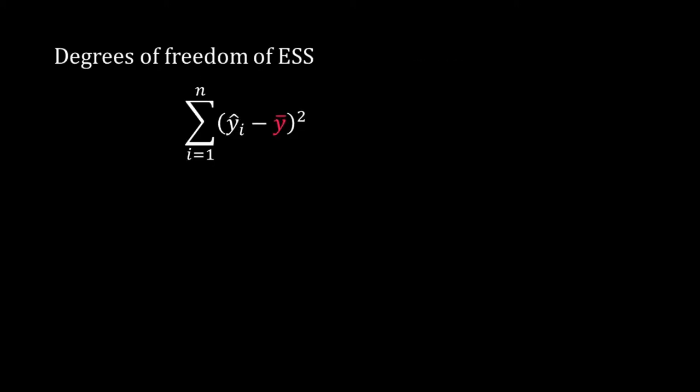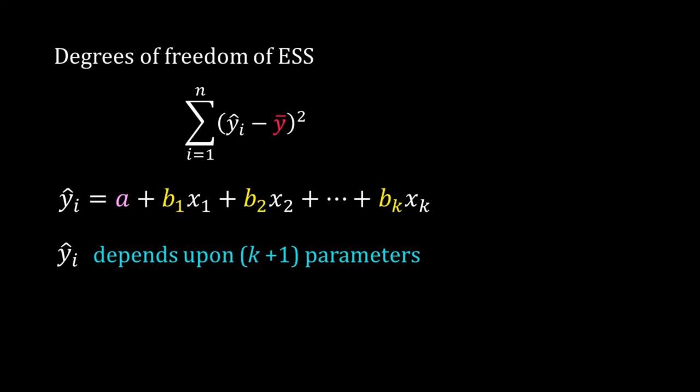We use a similar logic for ESS. Like TSS, we are taking a deviation from the mean y bar. We are not using the original y values in the data. Here yi hat is the value obtained from the regression model. So we cannot change the value of yi hat as per our whim. In a multiple regression model with k independent variables, we have k plus 1 parameters or coefficients: a, b1, b2, b3 and so on to bk. For a given value of predictors, the value of yi hat depends on this k plus 1 parameters. If we want to change yi hat, we have to change this parameter value. Now, how many of those I can change without affecting the mean y? You can use the logic we had for TSS.